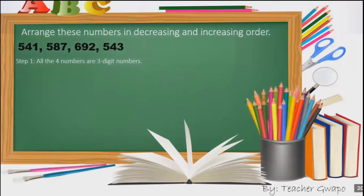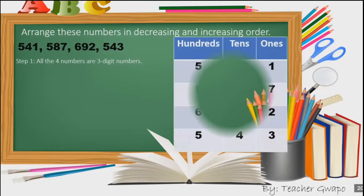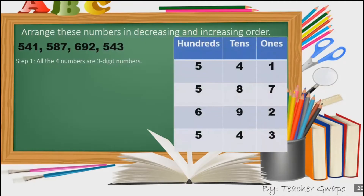Now let's try to arrange these numbers in decreasing and increasing order. The numbers here are 541, 587, 692, and 543. As you can see here in the place value table, in step number one, all four numbers are three-digit numbers.